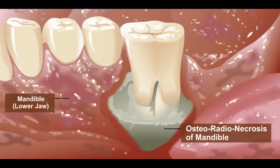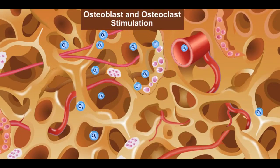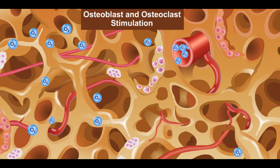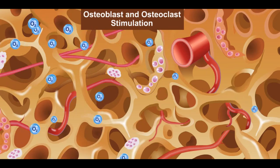Radiation injuries may affect bone or other soft tissues. Osteoradionecrosis is one such injury that occurs most commonly in the lower jaw. HBOT increases the oxygen concentration in the blood, stimulating new bone forming cells in the affected area.